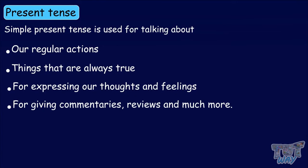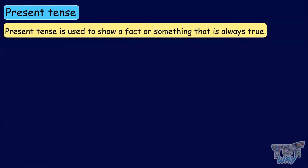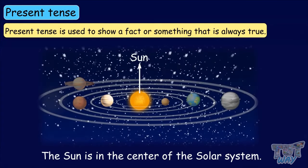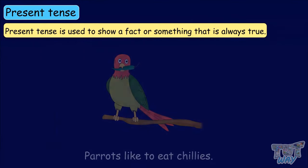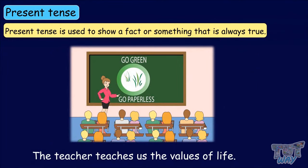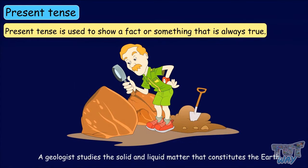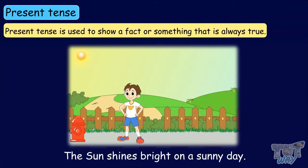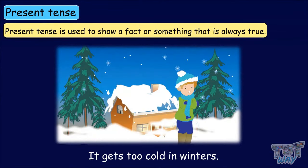Let's learn with examples. We use present tense to show a fact or something that is always true. For example: 'The sun is in the center of the solar system.' 'The dog guards our house.' 'Parrots like to eat chilies.' 'Teacher teaches us the values of life.' 'A geologist studies the solid and liquid matter that constitutes the earth.' 'The sun shines bright on a sunny day. It gets too cold in winters.' All these things are always true as they are facts, which is why we have used present tense here.